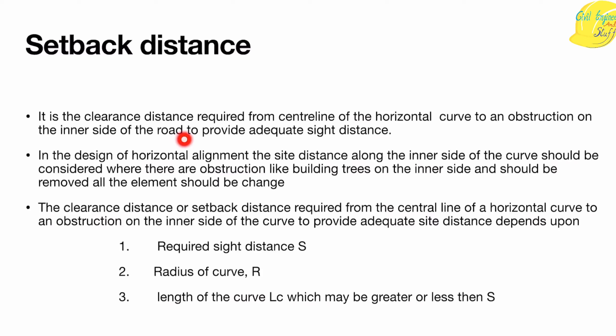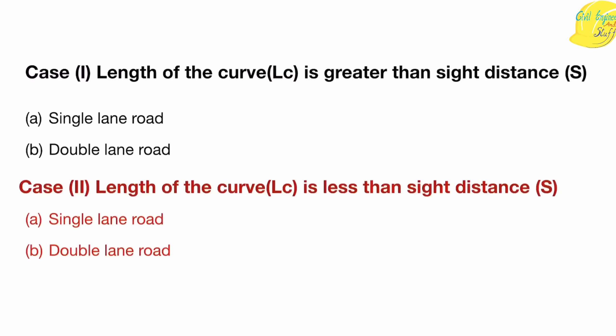The setback distance depends upon the side distance, the radius of the curve, and the length of the curve. There are two scenarios: sometimes the length of the curve is greater than the side distance, and other times the length of the curve is less than the side distance. For each case we have two sub-cases: one for a single lane road and one for a double lane road.